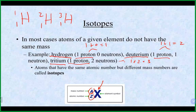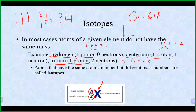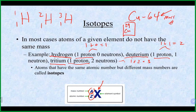Another common notation is something like Cu-64. In that case, 64 is the mass number — we know this because copper's atomic number on the periodic table is 29. If we convert to standard symbol notation, that would be copper with 64 on top and 29 on the bottom. That means copper here would have 64 minus 29 equals 35 neutrons.